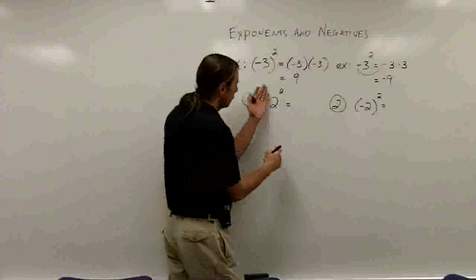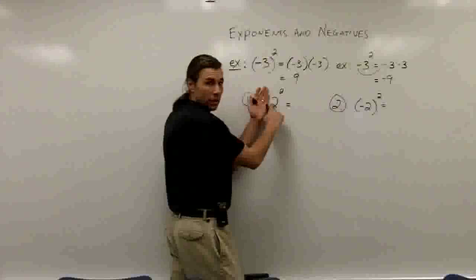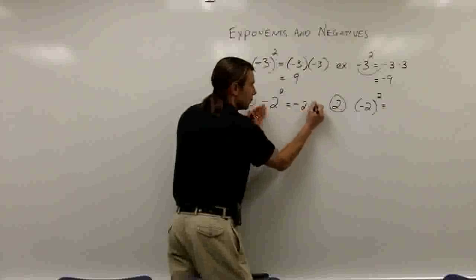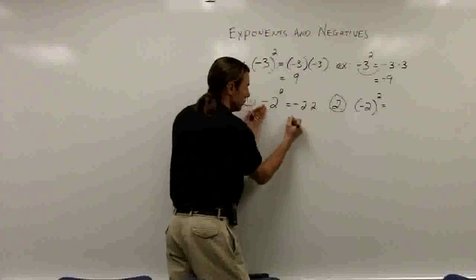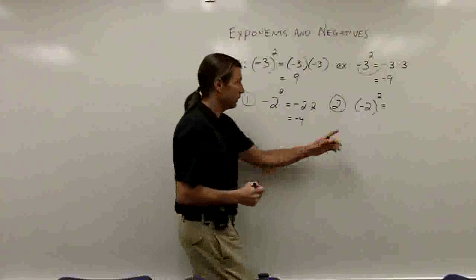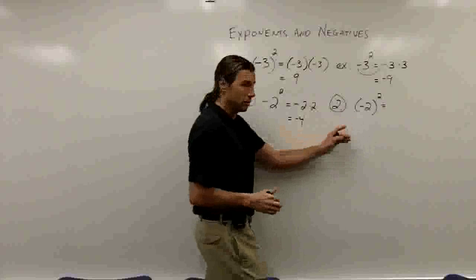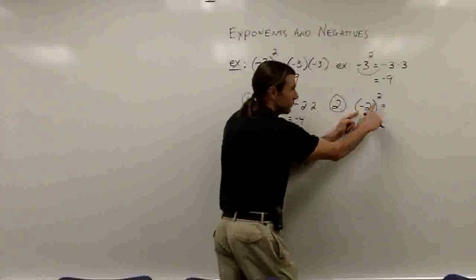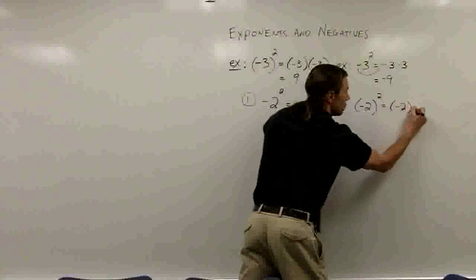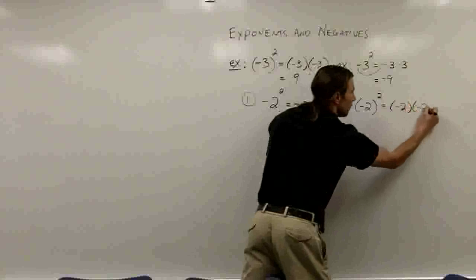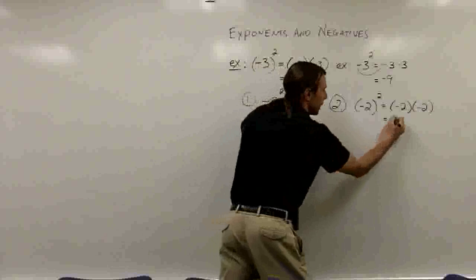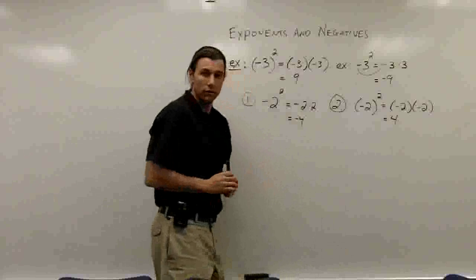In the first problem, just the 2 is being taken to the second power, so I bring the negative sign over and have 2 times 2, which gives me negative 4. In the second problem, both the negative and the 2 are being taken to the second power, so I have negative 2 times negative 2, which gives me positive 4.